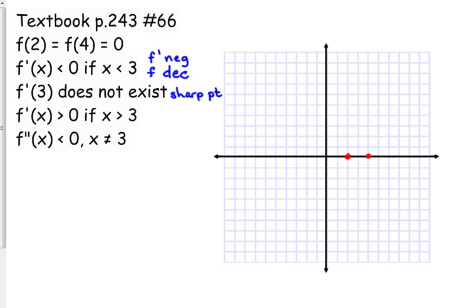f'(x) is greater than 0, so f' is positive, which means f is increasing when x is greater than 3, so to the right of 3.